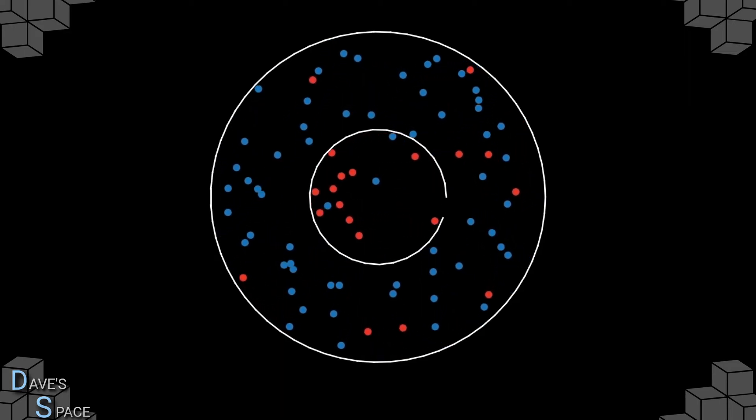At the end, we can see that there are now red particles in the outer container, and blue particles in the inner container. They have diffused.